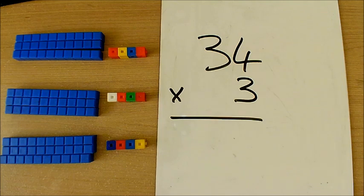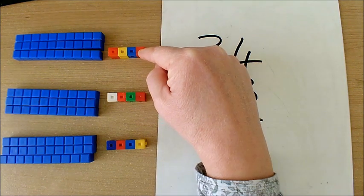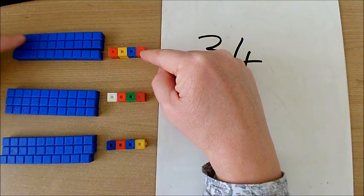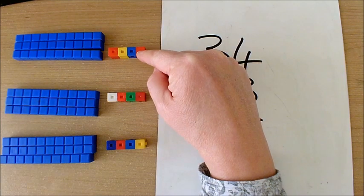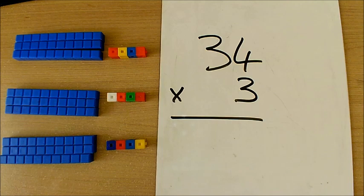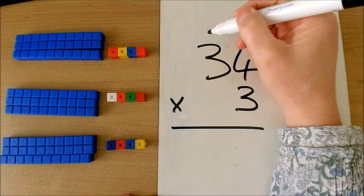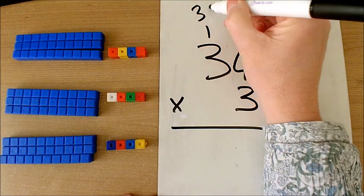I've shown a multiplication of 34 times 3 here in a column, and over here with my base 10 I have 30 here and 4 here, and that is shown 3 times. Now I don't know my 34 times tables, but what I can do is partition my 34 into a 30 and a 4, and I can do two separate calculations for those.